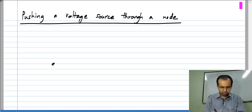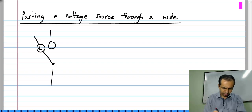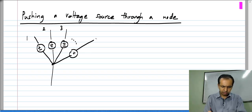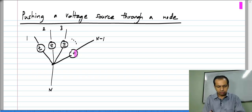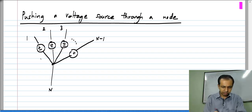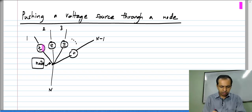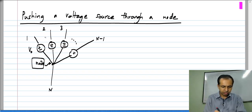Consider a node where a number of branches are connected. Let us say there are n branches connected to this node, and in n minus one of them there are voltage sources with the same polarity — meaning the negative terminal is connected to this node. There will be other nodes in the circuit, but this is the node we are focusing on, and all these voltage sources define negative towards the node and all have exactly the same voltage V naught.